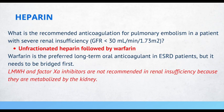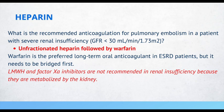What is the recommended anticoagulation for a pulmonary embolism in a patient with severe renal insufficiency? Unfractionated heparin followed by warfarin. Recall that low molecular weight heparin and factor Xa inhibitors are not recommended in renal insufficiency because they are metabolized by the kidneys. Warfarin is the preferred long-term oral anticoagulant in end-stage renal disease patients, but it needs to be bridged first with unfractionated heparin.